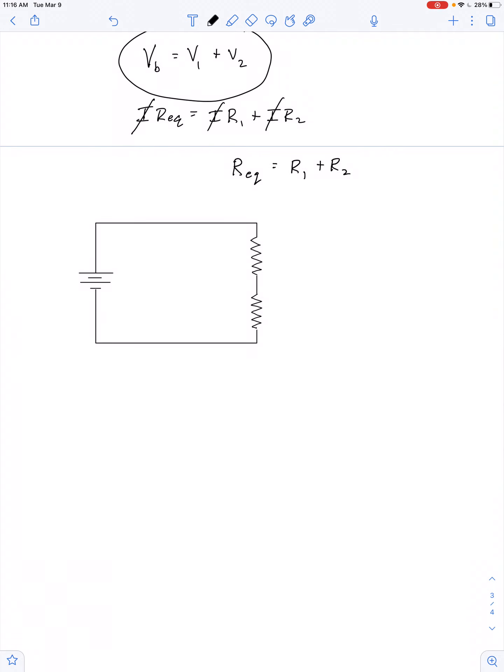Okay, well, what if I had three resistors connected in series? Yep, then the equivalent resistance is R1 plus R2 plus R3, and on and on for any number of resistors. I guess we could say R equivalent is just the sum of R subscript I.